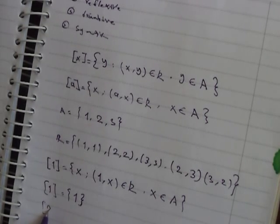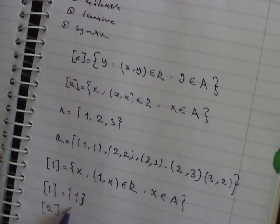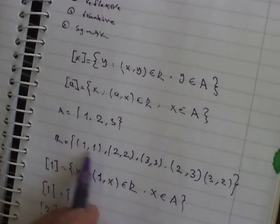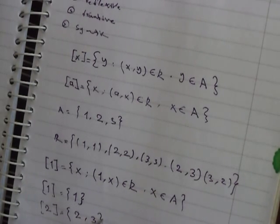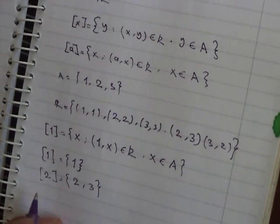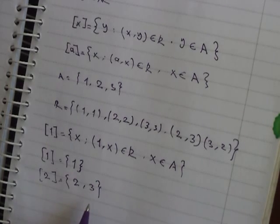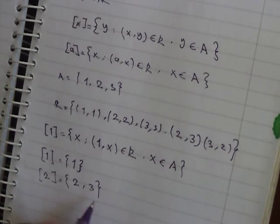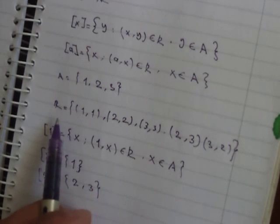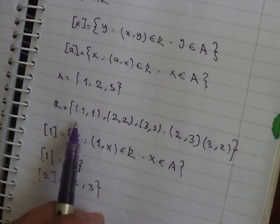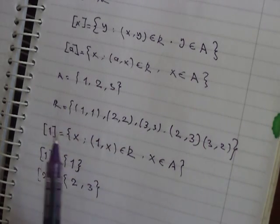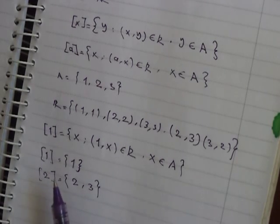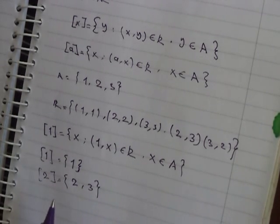The class of 2: we have (2,2), so 2 is in the class of 2. We also have (2,3), so 3 is in the class of 2. The class of 2 has two elements: {2, 3}. Our relation is an equivalence relation, so it is reflexive, transitive, and symmetric.